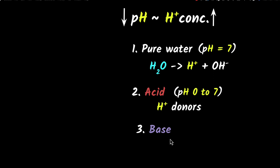What about bases? Bases are H+ acceptors. When you put a base in water, they will accept H+ ions, reducing the amount of H+ concentration in the solution. So H+ concentration reduces, pH will increase, and therefore the pH will be higher than 7.